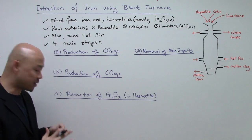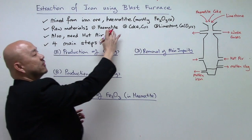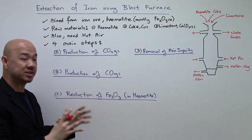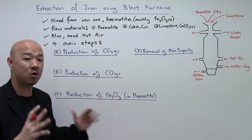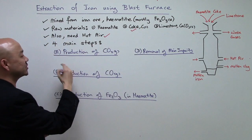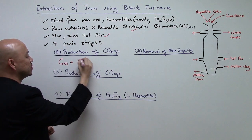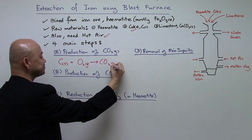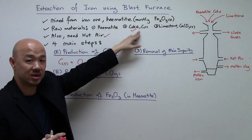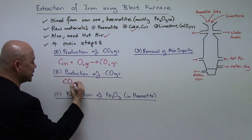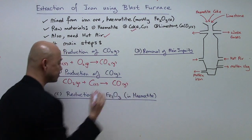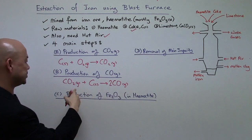The first step is the production of carbon dioxide. The coke reacts with the hot air: carbon plus oxygen forms carbon dioxide. Then the carbon dioxide reacts with more coke inside the blast furnace — carbon dioxide reacts with more carbon to form carbon monoxide. To balance this equation: CO₂ + C → 2CO.